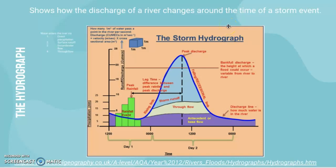There's a certain discharge level — for example, around 18 to 19 cumecs — at which, if you pass it, there's a flood. It's past the maximum capacity of the river channel, so water goes above and onto the floodplain.